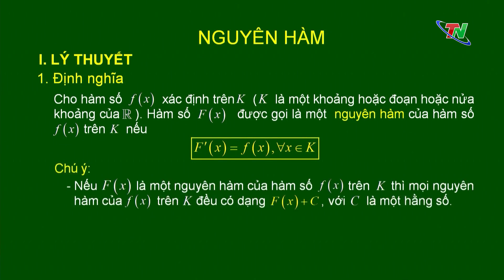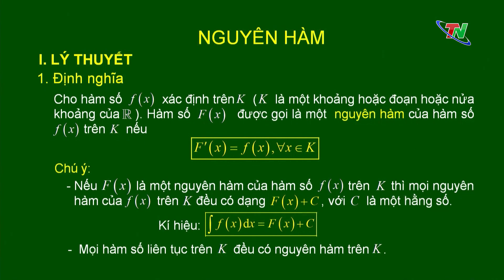Các em phải chú ý thêm. Thứ nhất, nếu F(x) là một nguyên hàm của hàm số f(x) trên tập K, thì mọi nguyên hàm của f(x) trên K đều có dạng F(x) + C, với C là một hằng số. Ta ký hiệu ∫f(x)dx = F(x) + C, được gọi là họ tất cả các nguyên hàm của f(x). Chú ý thứ 2: mọi hàm số liên tục trên K đều có nguyên hàm trên K.